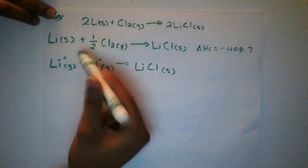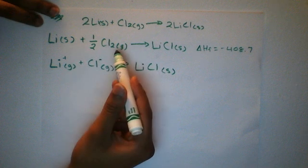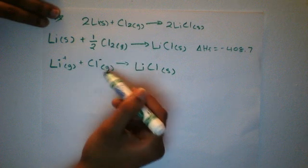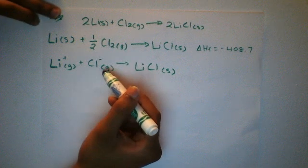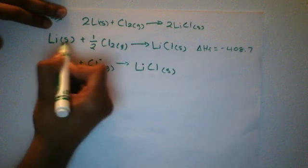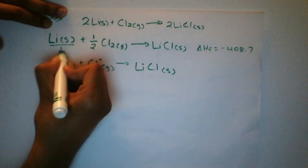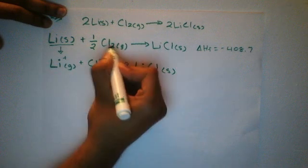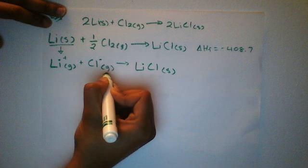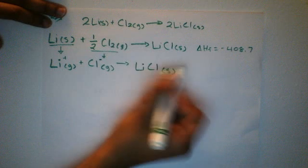The differences between the two equations are: we have a lithium cation instead of a lithium atom, and it's a gas. We also have a chlorine anion instead of one-half Cl2 gas. The product, LiCl solid, is the same on both sides. So we need to convert Li solid to Li+ gas, and 1/2 Cl2 gas to Cl- gas.